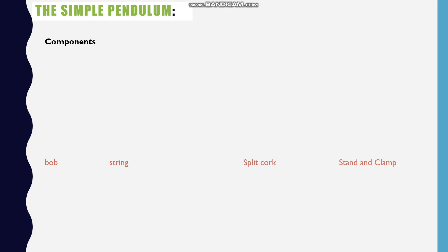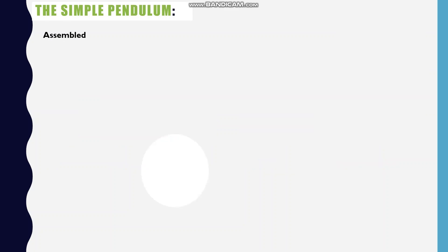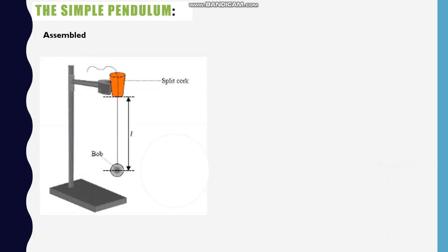The components of the pendulum are the bob, a piece of string, a split cork, and a stand and clamp. When assembled, the simple pendulum may look like this. We have the stand and clamp which is used to hold everything together, and here is a string that is suspending the bob from a fixed point below the split cork.